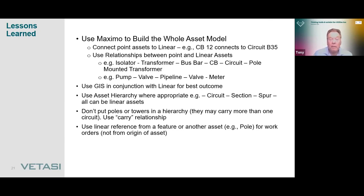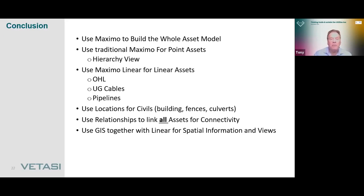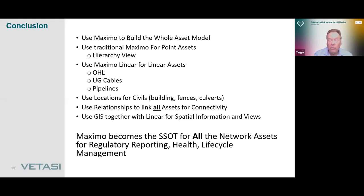Conclusion: Use Maximo to build the whole asset model. Use traditional Maximo for point assets. Use Maximo linear to represent linear assets such as overhead lines, underground cables, and pipelines. Use locations for civils where there may not be an asset, such as fences, buildings, culverts. Use relationships to link all activities for connectivity and to show things like carrying — the pole carries, or the building contains. Use GIS together with linear for spatial information. Basically, Maximo becomes a single source of truth for all network assets and work management, regulatory reporting, asset health, and lifecycle management. That concludes the presentation — thank you for listening.